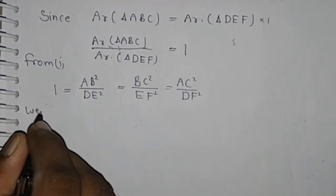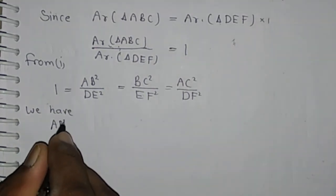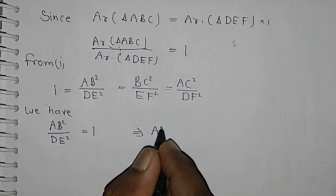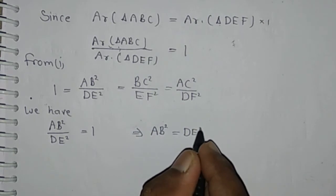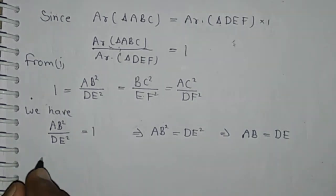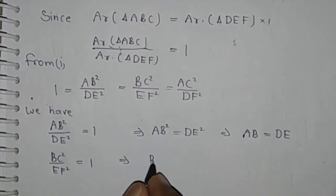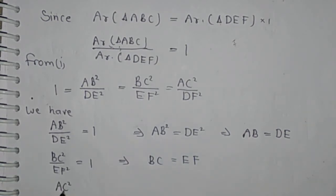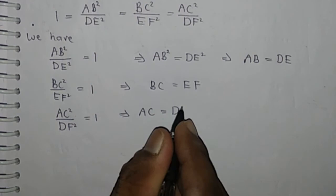From AB² / DE² = 1, we get AB² = DE², so AB = DE. Similarly, BC² / EF² = 1 gives BC = EF. And AC² / DF² = 1 gives AC = DF.